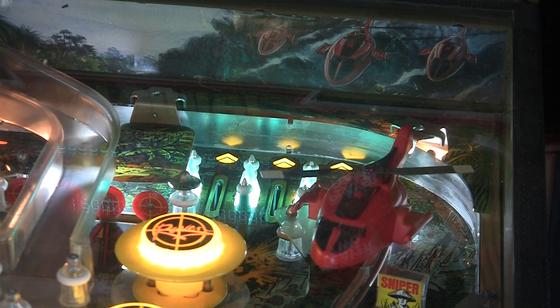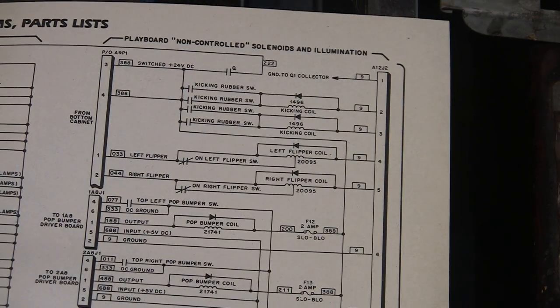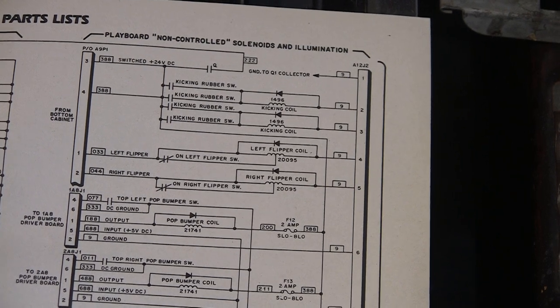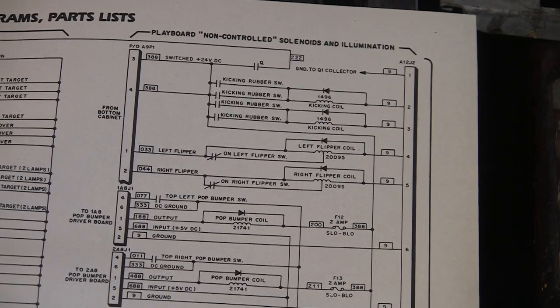So what's up with those rollovers? Here's the process. So first thing we need to do is find out where those lights are in the schematics. So here are the schematics right here. This is the wiring diagram for the light matrix.